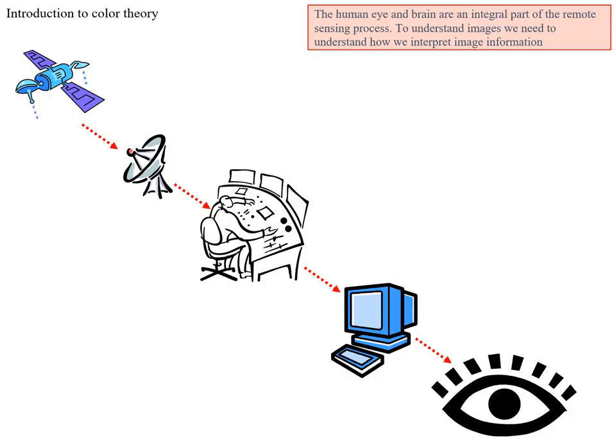When we think about the remote sensing process, we might think of a satellite recording images that are beamed down to the earth, some adjustment that's done, and then the image is shown on your computer. But it's important to know that the human eye and brain are an integral part of the remote sensing process. To understand images, we need to understand how we interpret image information.